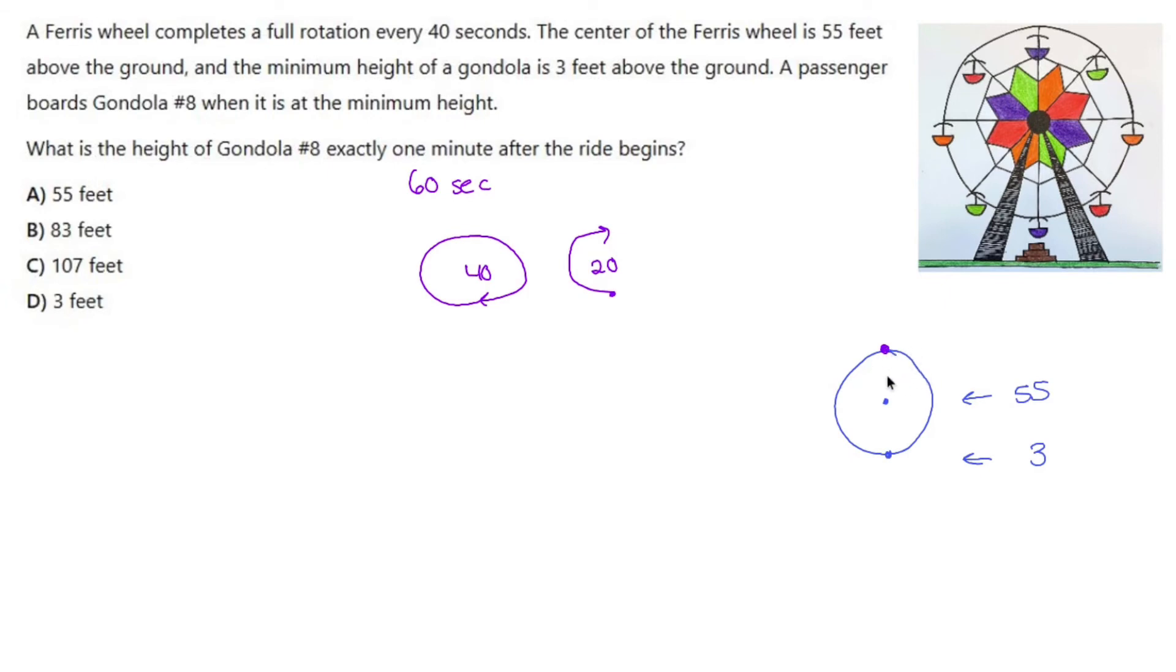So that's where we are in this - we're at the very top. So I need to figure out how high off the ground the very top is. Well, between the center and the very bottom we're looking at a difference of 55 minus 3, which is 52. So up here is going to also be a difference of 52.